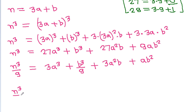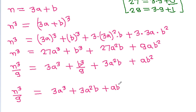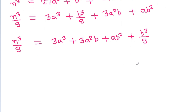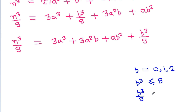So n cubed by 9 equals 3a³ plus 3a²b plus ab² plus b³ divided by 9. Since b is equal to 0, 1, or 2, we have b³ less than or equal to 8, which means b³ divided by 9 is less than 1.